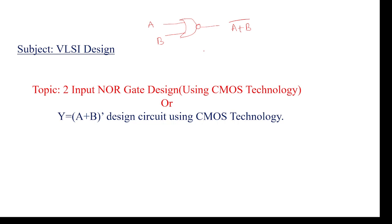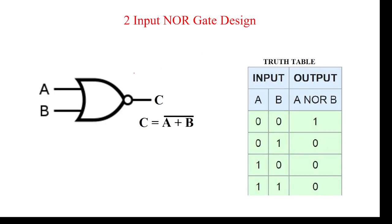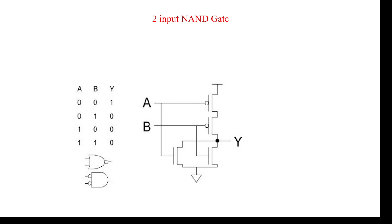I will tell you how to draw the circuit and what are the design rules. This is the symbol. As you know: 0+0=0, bar means 1. 1+0=1, bar means 0. 0+1=1, bar means 0. 1+1=1, bar means 0. This is the truth table.